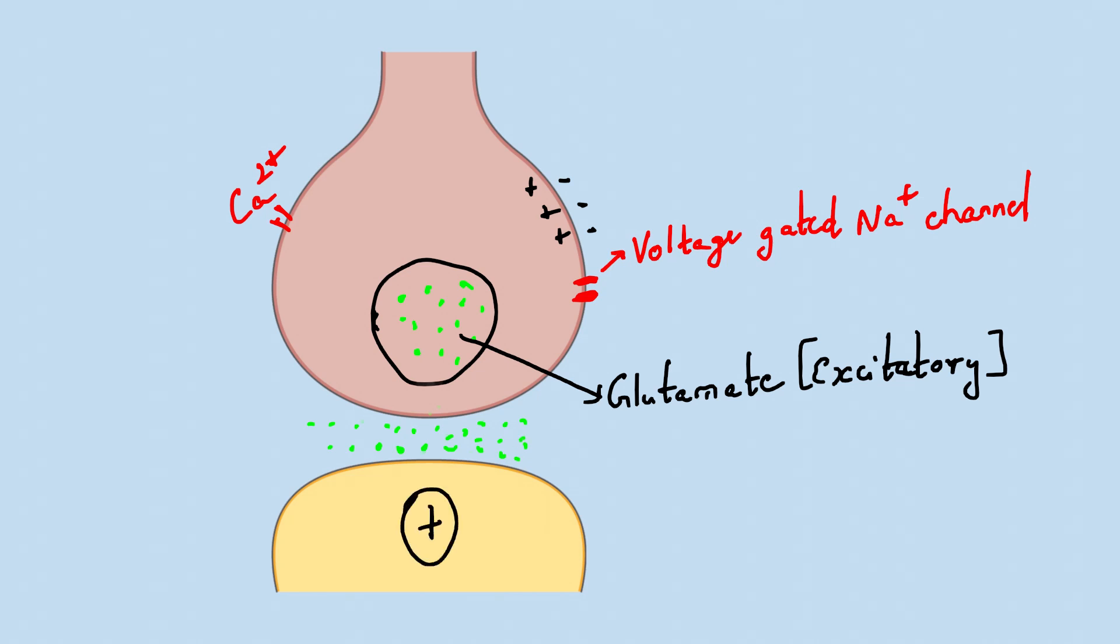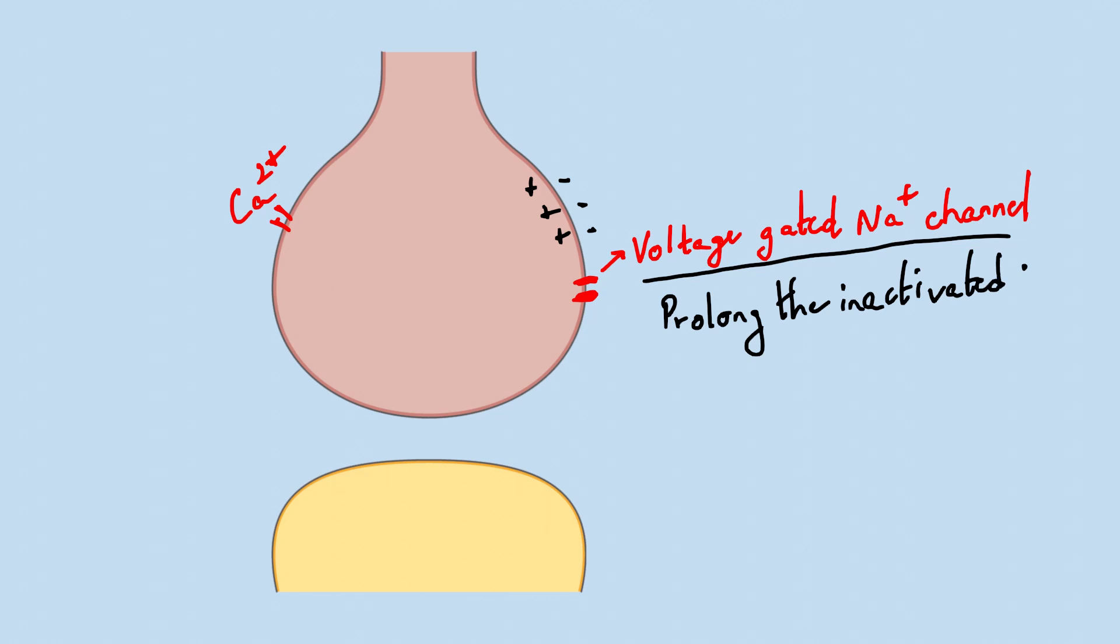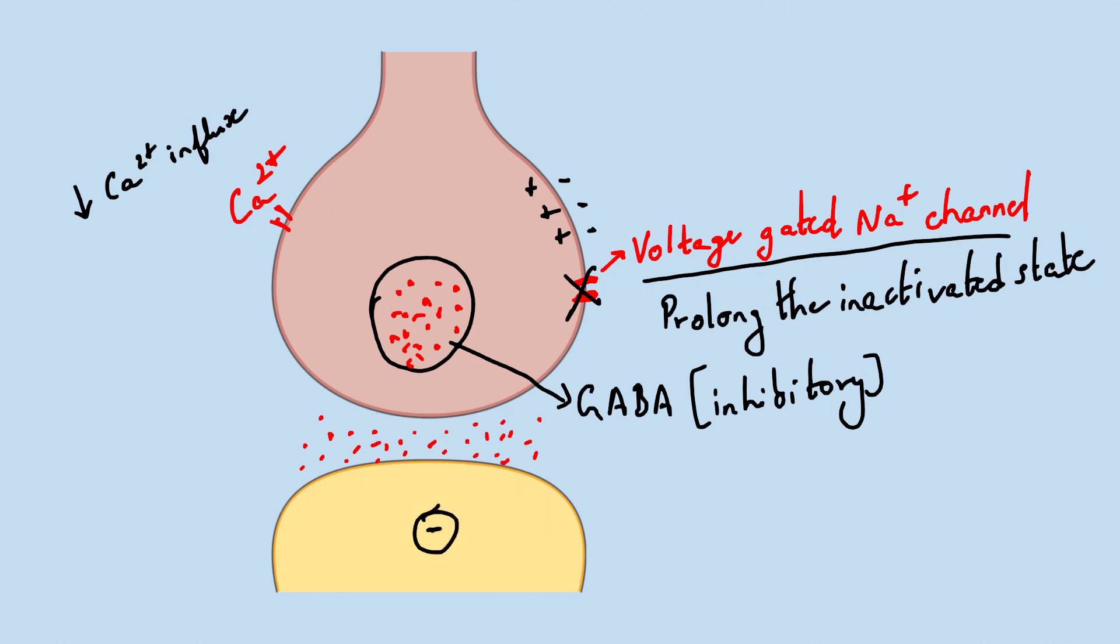Actually, in epilepsy, there is increased release of glutamate, so there will be increased excitation. But phenytoin will prolong the inactivated state of voltage-gated sodium channel and also decrease the influx of calcium ion. This depresses the release of glutamate and facilitates the release of GABA, which is an inhibitory neurotransmitter, which will inhibit the post-synaptic neuron.